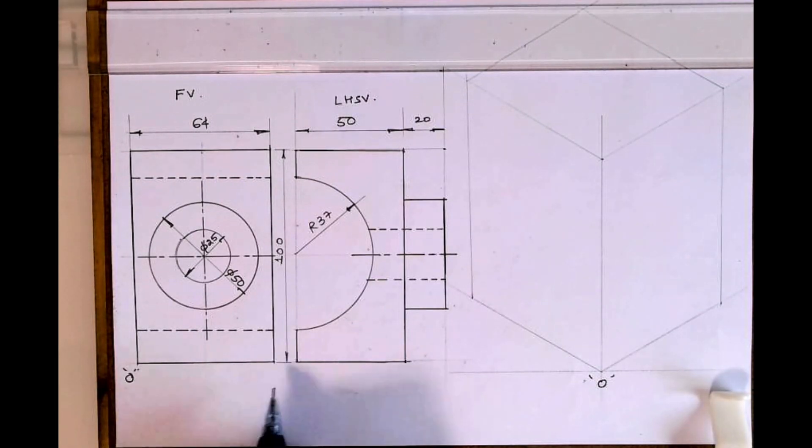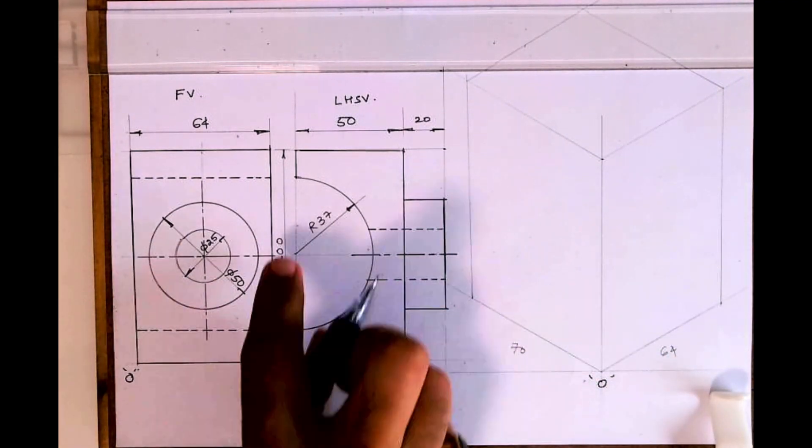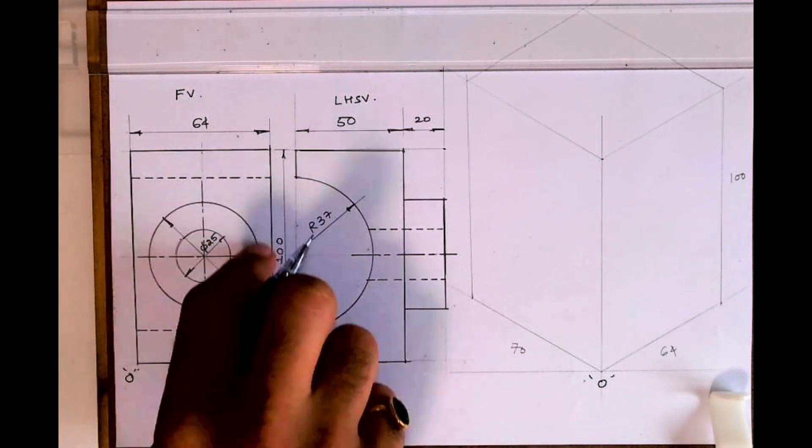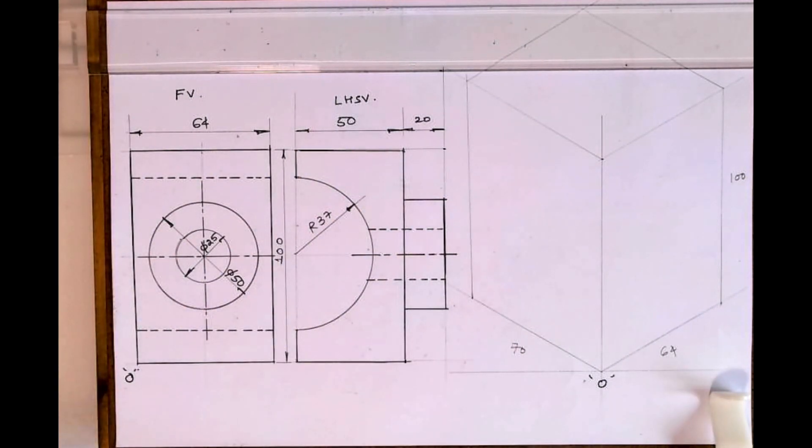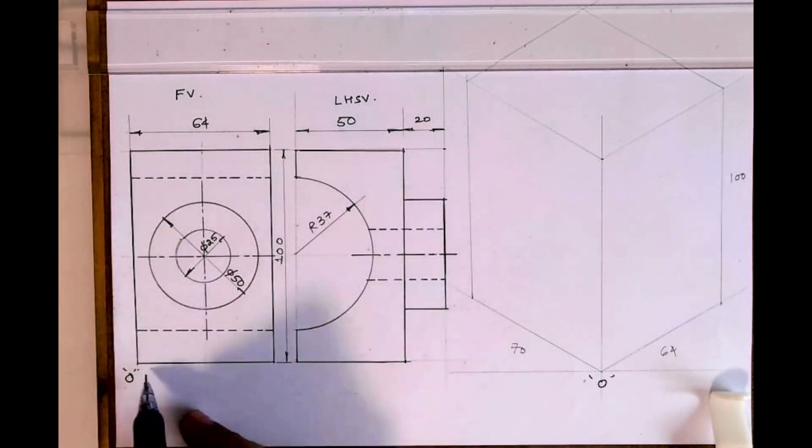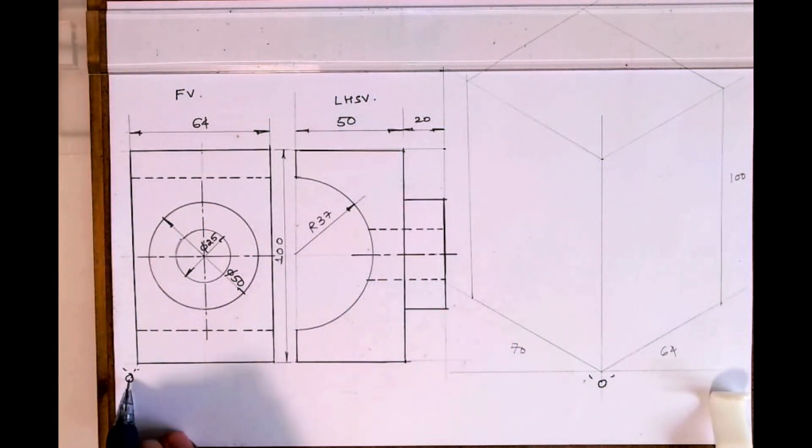Welcome to technical drawing. Today we will see this sum in isometric. Now if you see on right hand side we have 64, on left hand side we have 70, and height is 100. So first we will draw layout. Then if you see there are two parts - this rectangle and one circle. In this also there are two parts, so this part corresponds to this and this corresponds to this. First we'll start with this one.